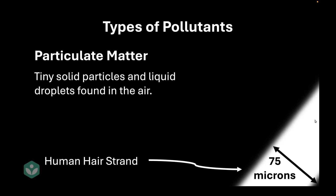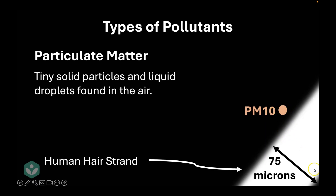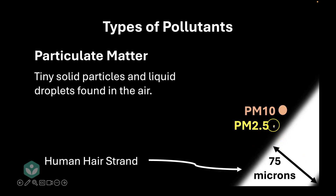We have two types of particulate matter. One is called PM10, and this dot here would approximately be the size of a PM10 particle relative to the width of a strand of hair. Our second type of particulate matter is called PM2.5, and that's how tiny it would be in comparison to a single strand of hair.